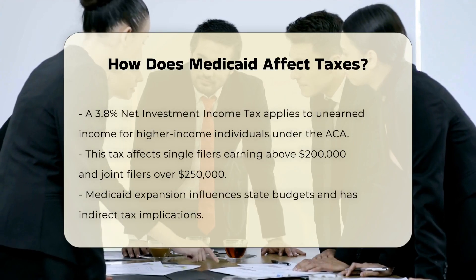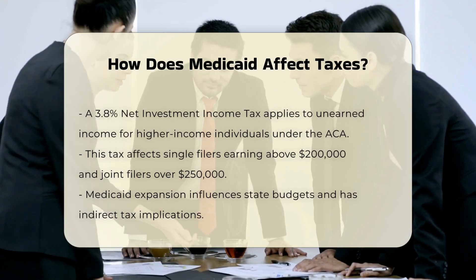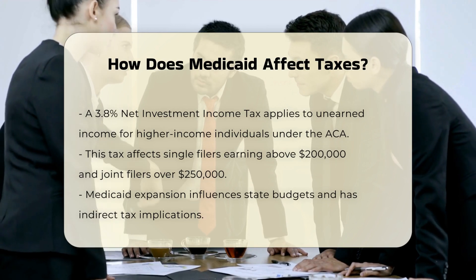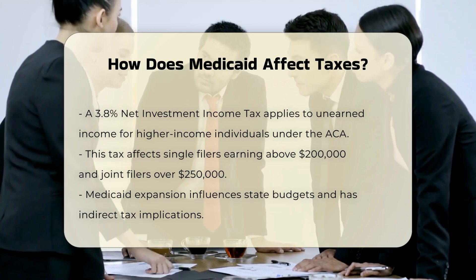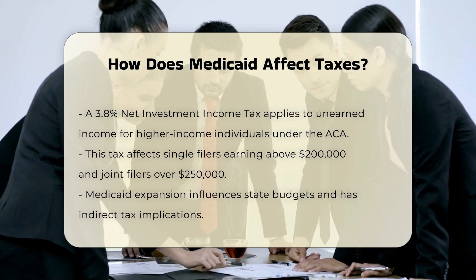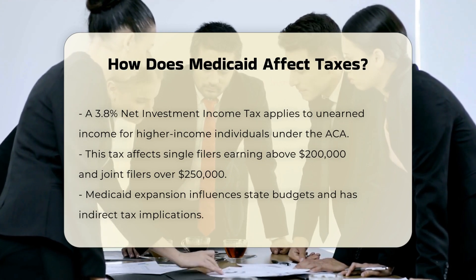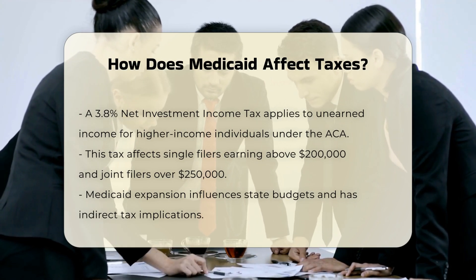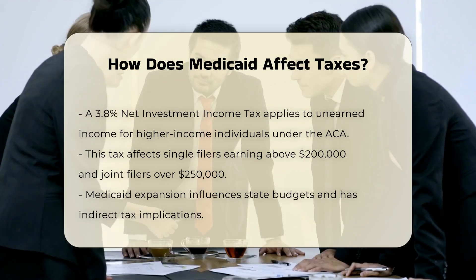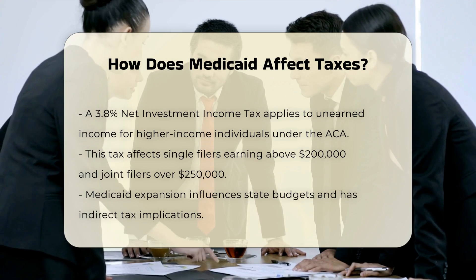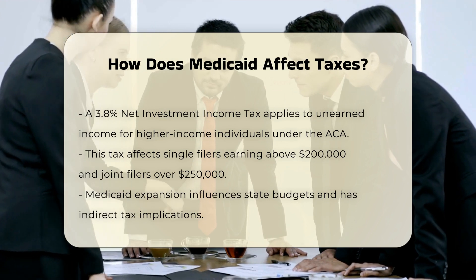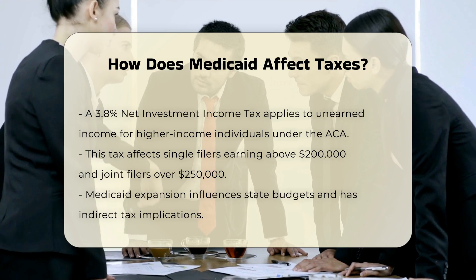Net Investment Income Tax: The ACA also implemented a 3.8% Net Investment Income Tax on unearned income for higher-income individuals. This applies to those with incomes above $200,000 for single filers, $250,000 for joint filers, and $125,000 for married individuals filing separately. Unearned income includes royalties, rents, annuities, dividends, certain capital gains, and passive business activities.